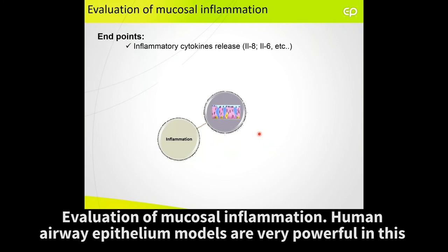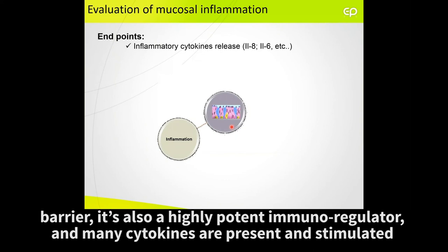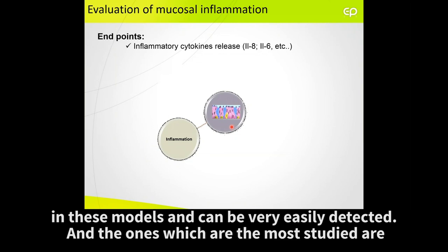Evaluation of mucosal inflammation. Human airway epithelium models are very powerful in this way. There is a lot of evidence in the literature that the airway epithelium is not only a physical barrier, it's also a highly potent immunoregulator, and many cytokines are present and stimulated in these models and could be very easily detected. The ones most studied are IL-8 and IL-6, for example.